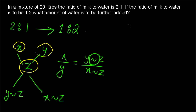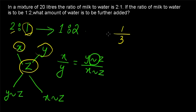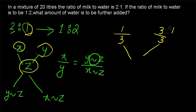To apply the rule of allegation, let's take the quantity of water. The quantity of water in the first mixture is 1 by 3, since the ratio is 2 is to 1. We are going to further add water only — no milk is present — so we write it as 3 by 3, which equals 1. So 3 by 3 amount of water is added to the 1 by 3 in the first mixture.